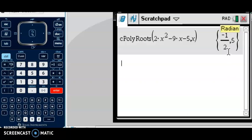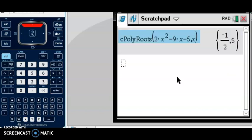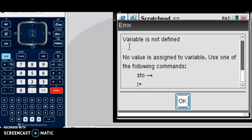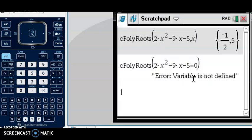These are your zeros. These are your solutions. Let's just say we did put equals zero by accident. It will have an error. It says variable not defined. So don't do that. Put comma X instead. Your solutions are negative 1 half and 5.